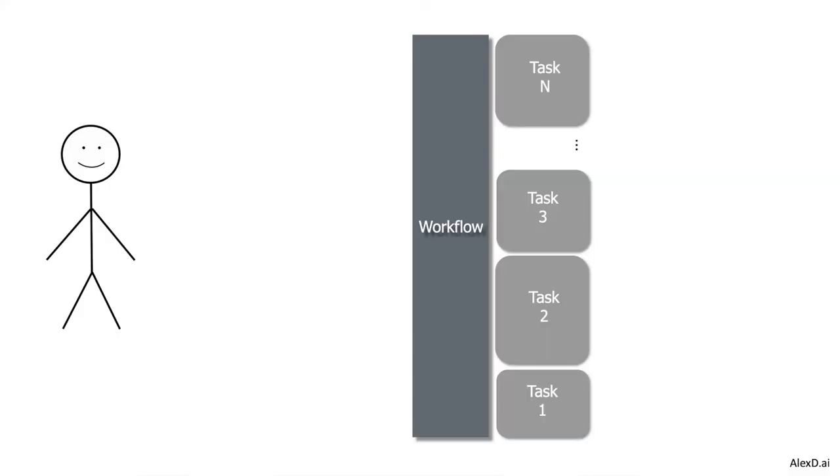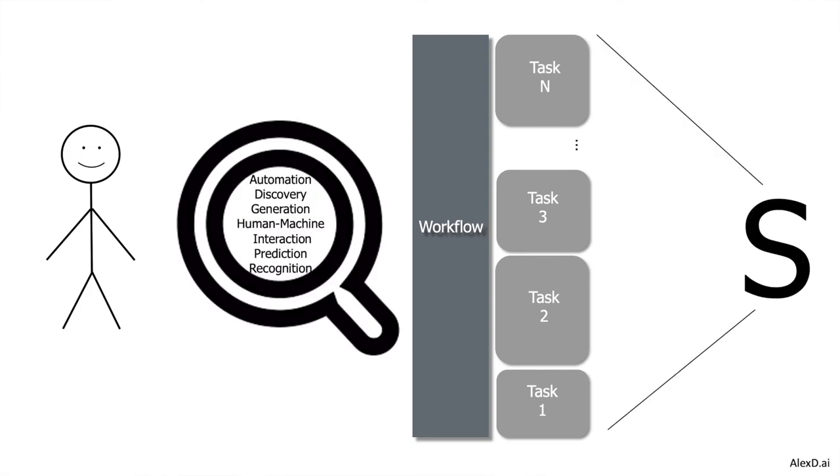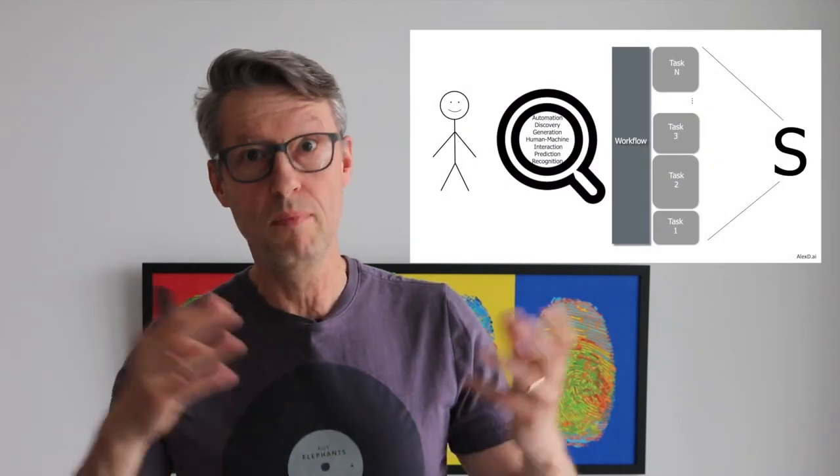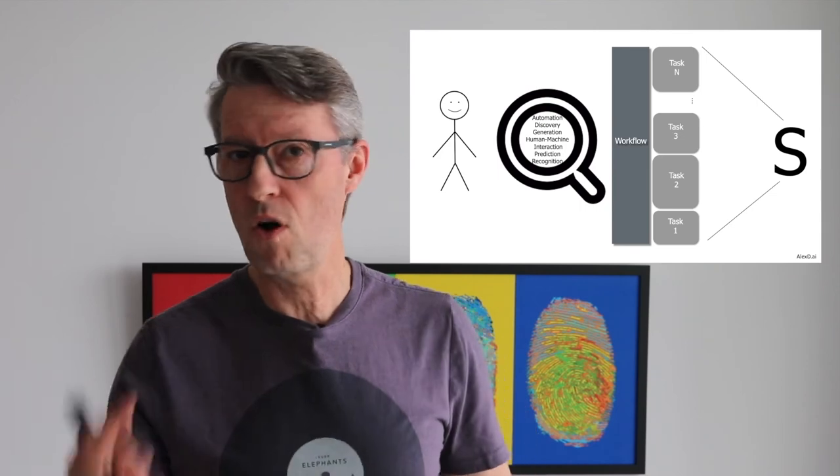I cannot tell you what your specific situation is, but my advice is: look at a workflow or process that you have, a new process or product that you want to create, and use this lens of AI patterns — automation, generation, human-machine interaction, recognition, discovery, prediction — and see if you can find a situation where AI applies to your case. Something that, if you apply AI to it, will get you real value at the end.